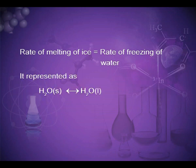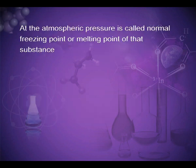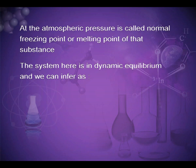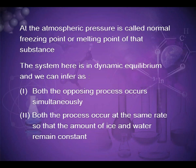This is represented as H₂O (solid) ⇌ H₂O (liquid). The temperature at which solid and liquid forms of a pure substance are in equilibrium at atmospheric pressure is called the normal freezing point or melting point. The system is in dynamic equilibrium: both opposing processes occur simultaneously and at the same rate, so the amounts of ice and water remain constant.